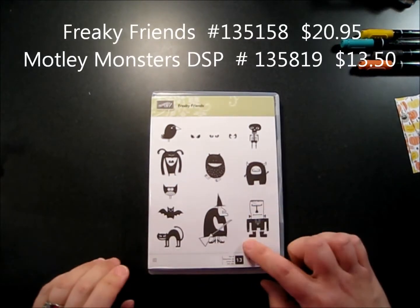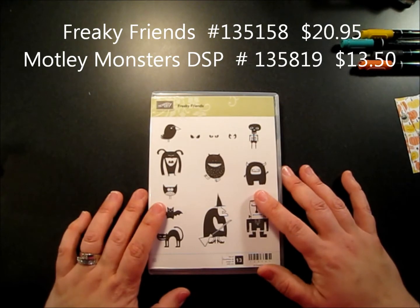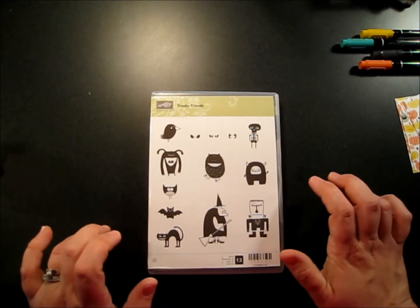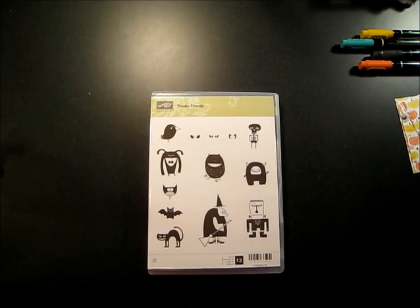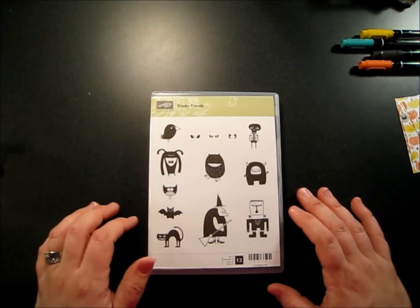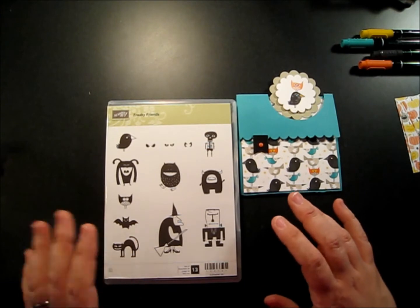This is going to be the video tutorial for the candy stand that we made to go with it. We used the Freaky Friends stamp set and the Motley Monsters designer series paper that goes with it, along with all the cardstock colors that coordinate - Bermuda Bay, crushed curry, tangerine tango, basic black, Sahara sand, and whisper white. We made our little card and then a candy stand to go with it.